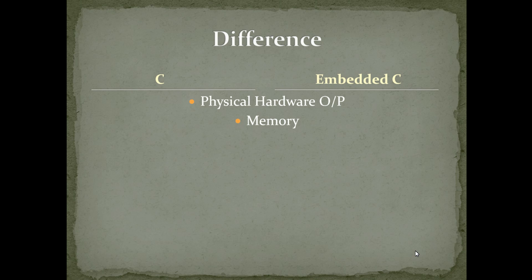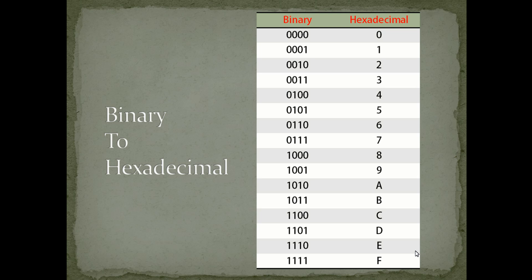That is the basic difference between C and embedded C. The first and foremost thing to study in embedded C is data conversion, especially binary to hexadecimal conversion. You can see in this table: on the left we have binary data and on the right we have the corresponding hexadecimal data.